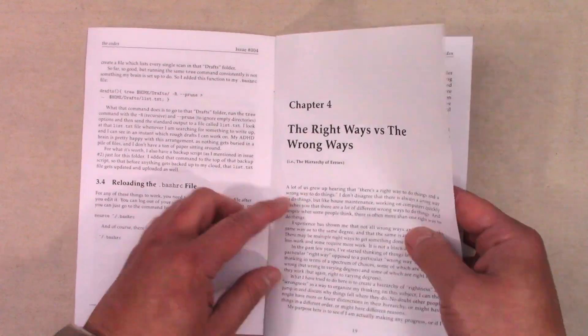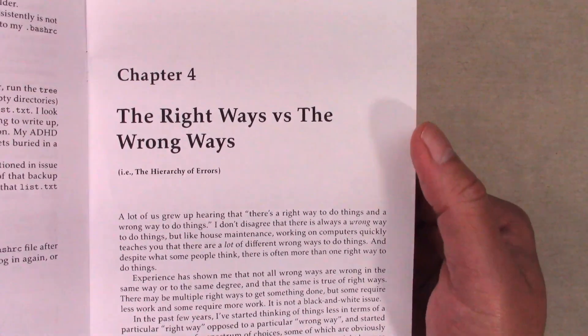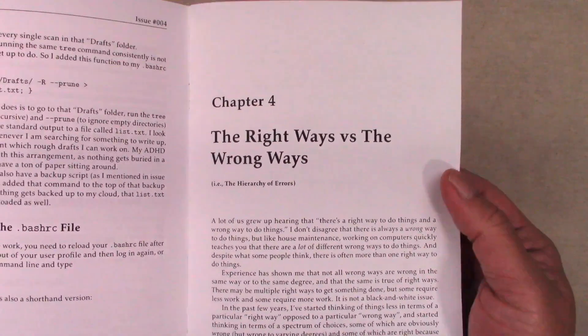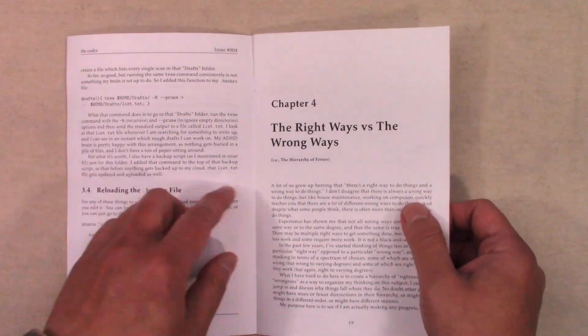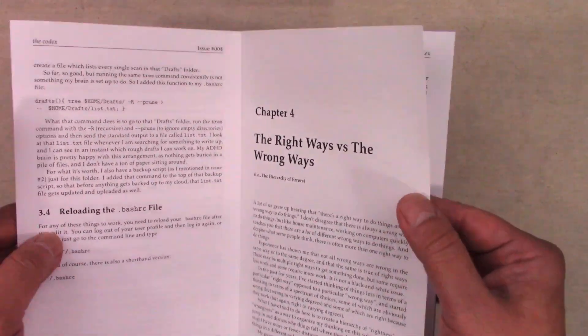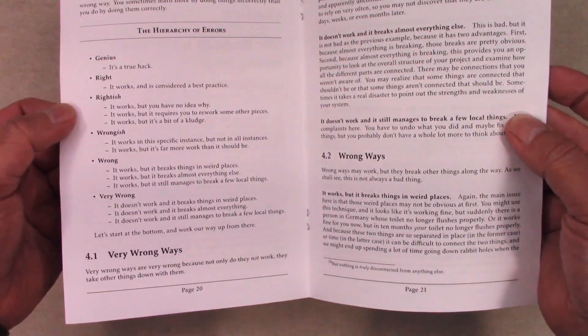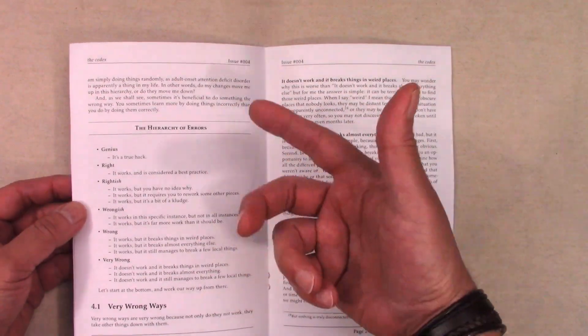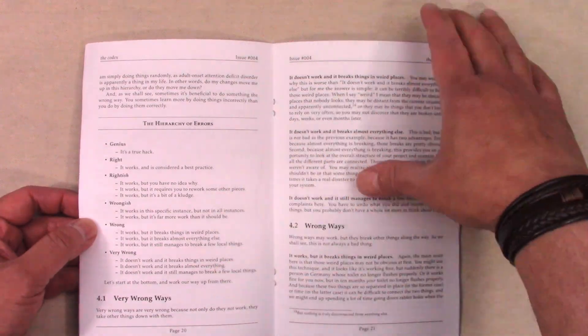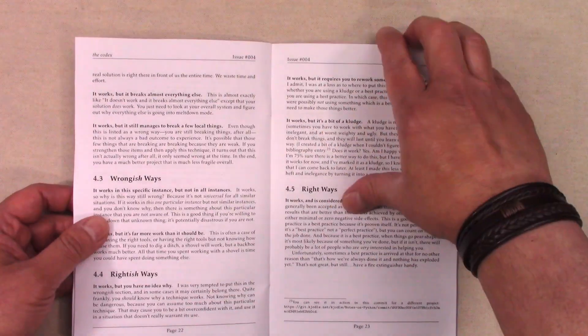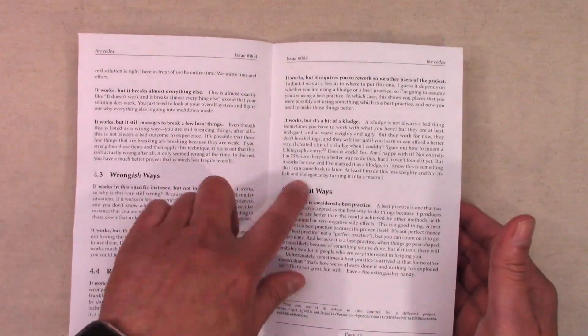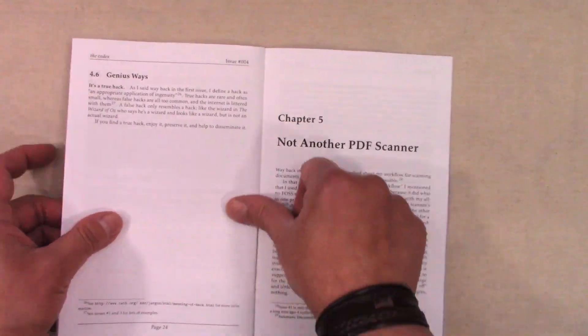Then I have a thing called the hierarchy of errors and I realize I probably titled that wrong. It's the right ways versus the wrong ways because my whole life I've been told there's a right way and a wrong way to do things. Turns out there are multiple right ways and multiple wrong ways and I tried to put these in an order that makes sense because then I can tell are the improvements I'm doing actual improvements or are they taking me in the wrong direction. I spend quite a bit of time discussing that so you might disagree with me on some of these things and that would be great.